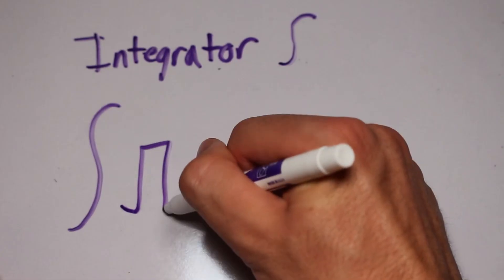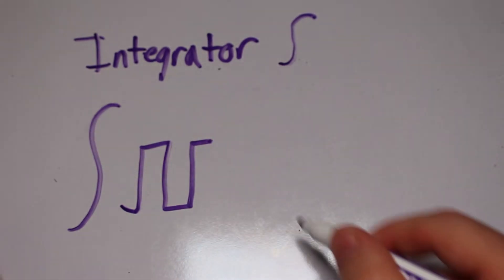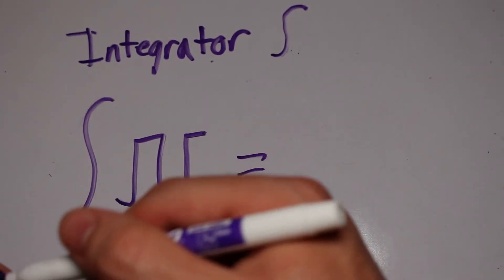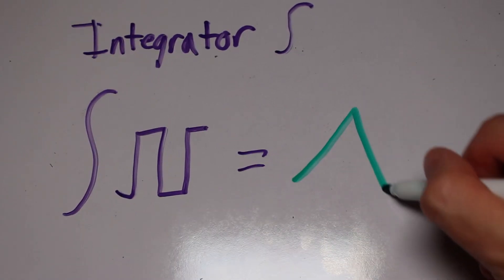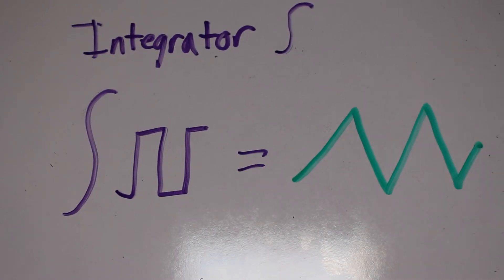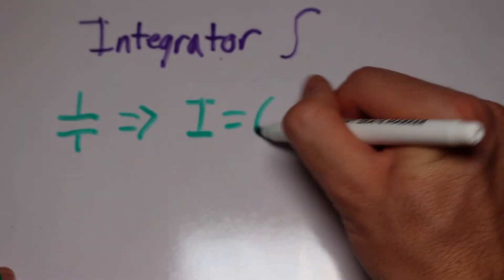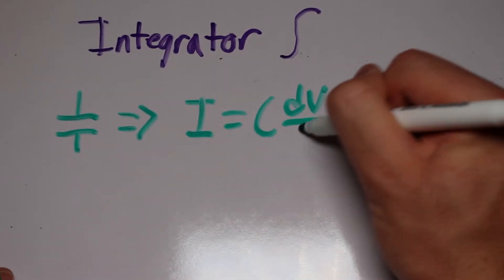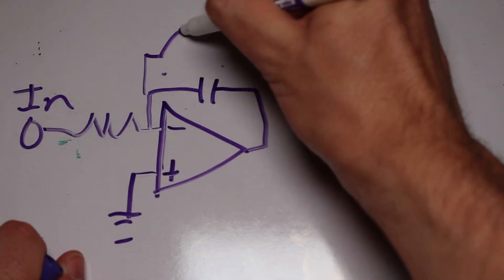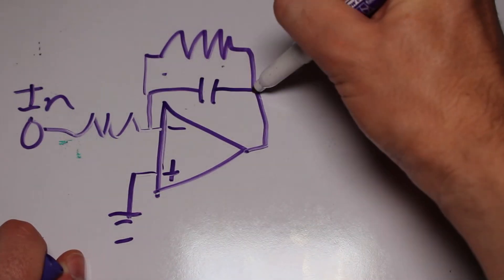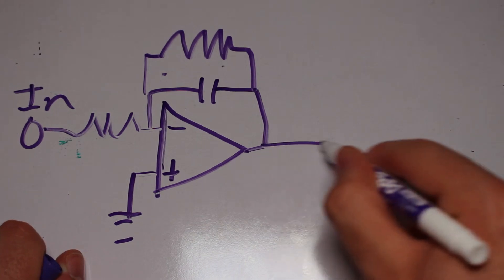But as an extremely quick reminder, the integral is just the area under the curve, so if you took the integral of a square wave, you would get a triangle wave. Anyways, we can take advantage of the capacitor's function to integrate functions for us. The equation for a capacitor is the current equals the capacitance multiplied by the change in voltage over the change in time. After placing the capacitor parallel to the feedback resistor, we have our integrator. But how does it all work?